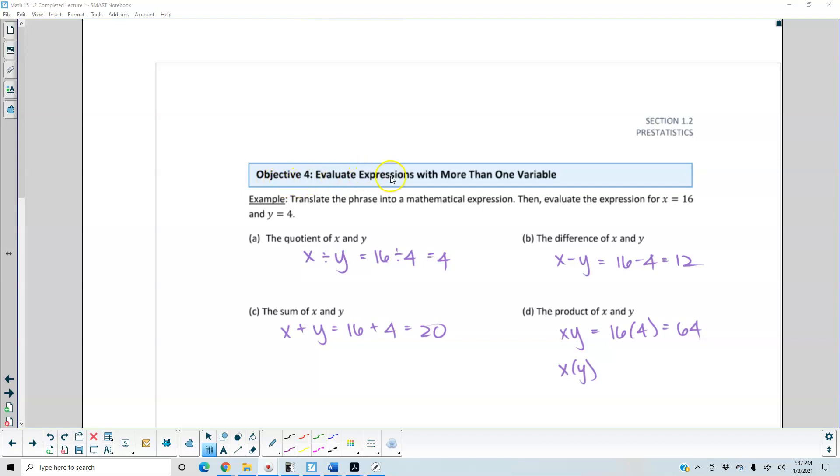Objective 4. Evaluate expressions with more than one variable. Example: translate the phrase into a mathematical expression. Then evaluate the expression for x equals 16 and y equals 4.